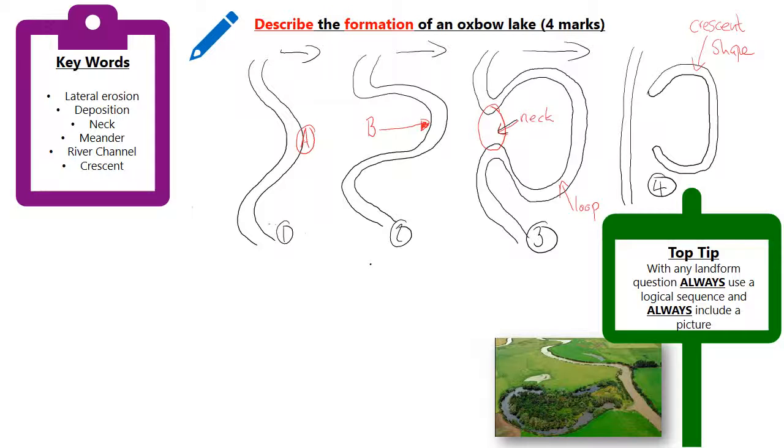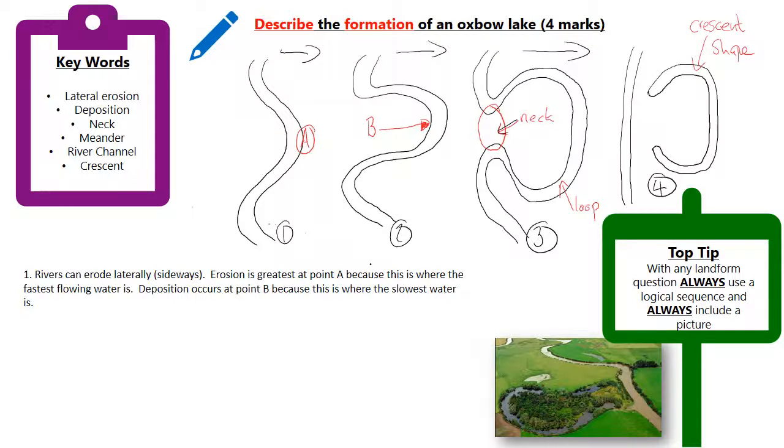If we have a look at what we might write for number one, it says rivers can erode laterally sideways, so we've used a keyword there. Erosion is greatest at point A, and this is something to note: whenever you do diagrams, make sure that you label them A or B or as I've done here, neck or loop.